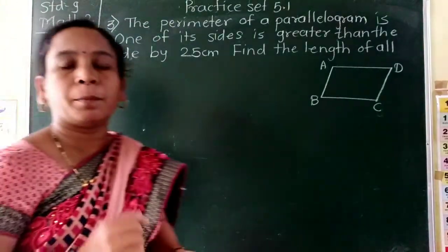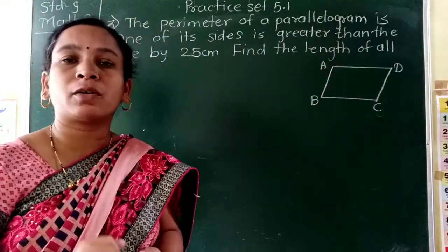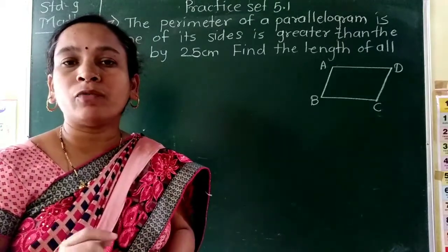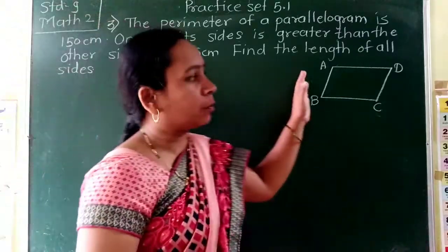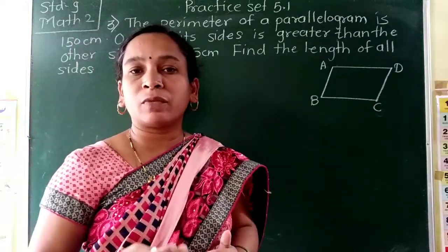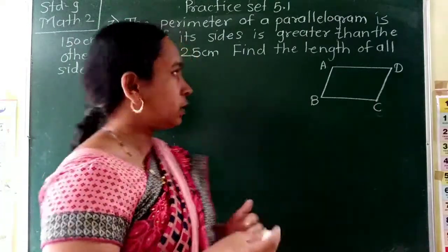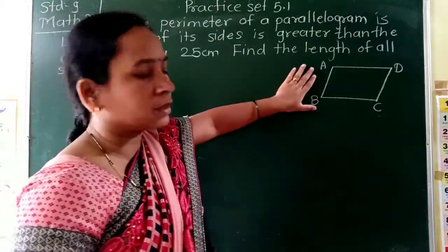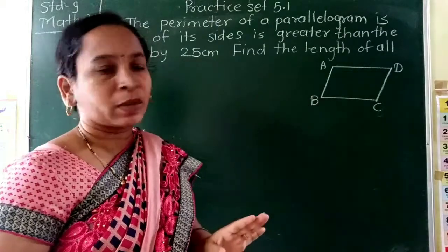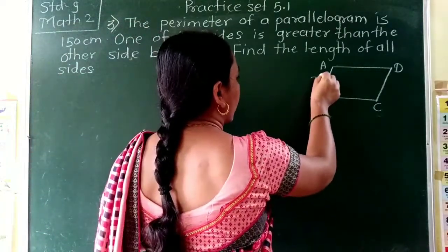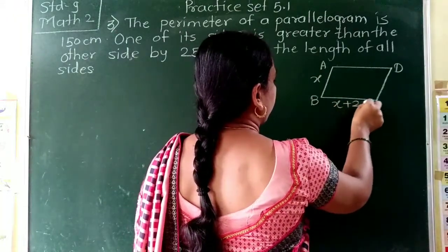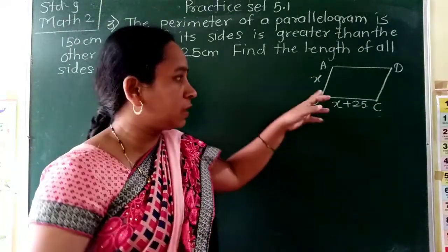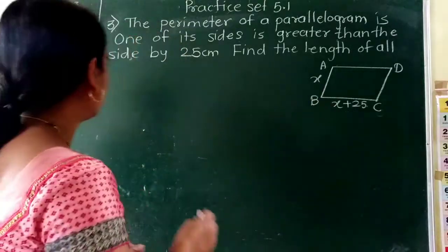In the third example, they have given the perimeter of a parallelogram. The perimeter means it is the total length — the sum of all sides of a parallelogram. We know the property of sides: opposite sides of a parallelogram are always congruent. They gave the relation that one side is greater than the other side by 25 cm. If I consider this quadrilateral as a parallelogram, I will let one side AB equal x, so the adjacent side BC equals x plus 25.